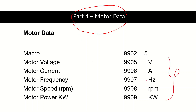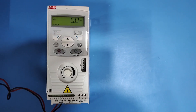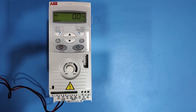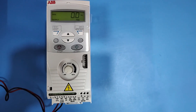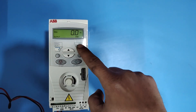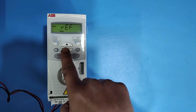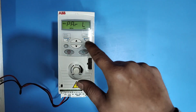Next part is motor data. Check the motor data parameters and how to enter motor data in the ABB ACS 150 drive. Press Enter, press the down button to PARL, then press Enter.